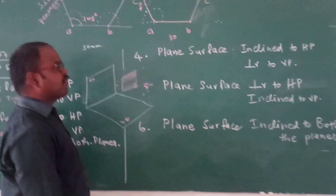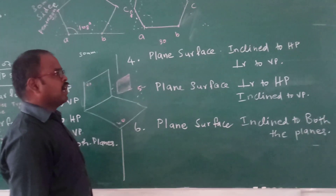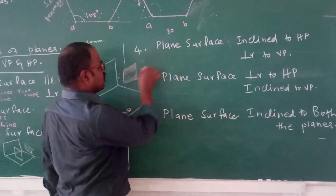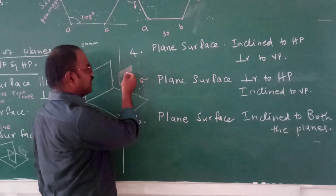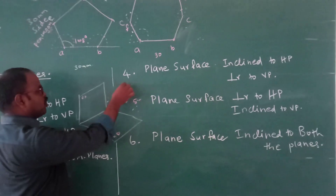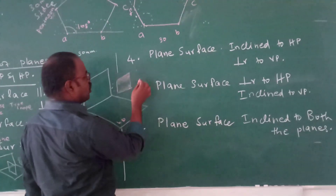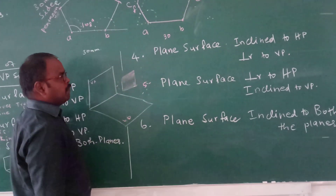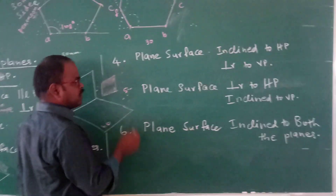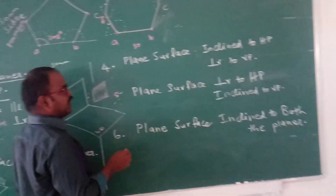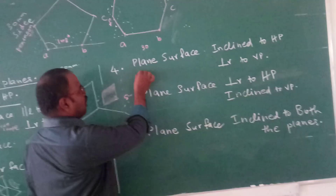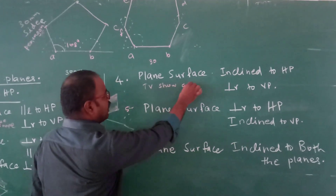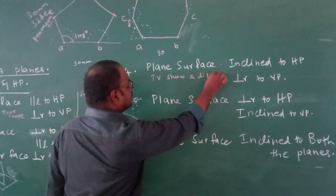The fourth case is: plane surface inclined to HP and perpendicular to VP. Here, the planar surface is inclined to HP only.